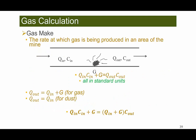Now let's look at the gas make problem. In a gas make problem, you have the total volumetric flow rate at the inlet (Q_in), the concentration of a certain gas at the inlet, and the gas make G — the rate of emission of that gas. You also have the total flow rate at the return (Q_out) and the concentration of that gas in the return air. The relationship is: Q_in × C_in + G = Q_out × C_out.